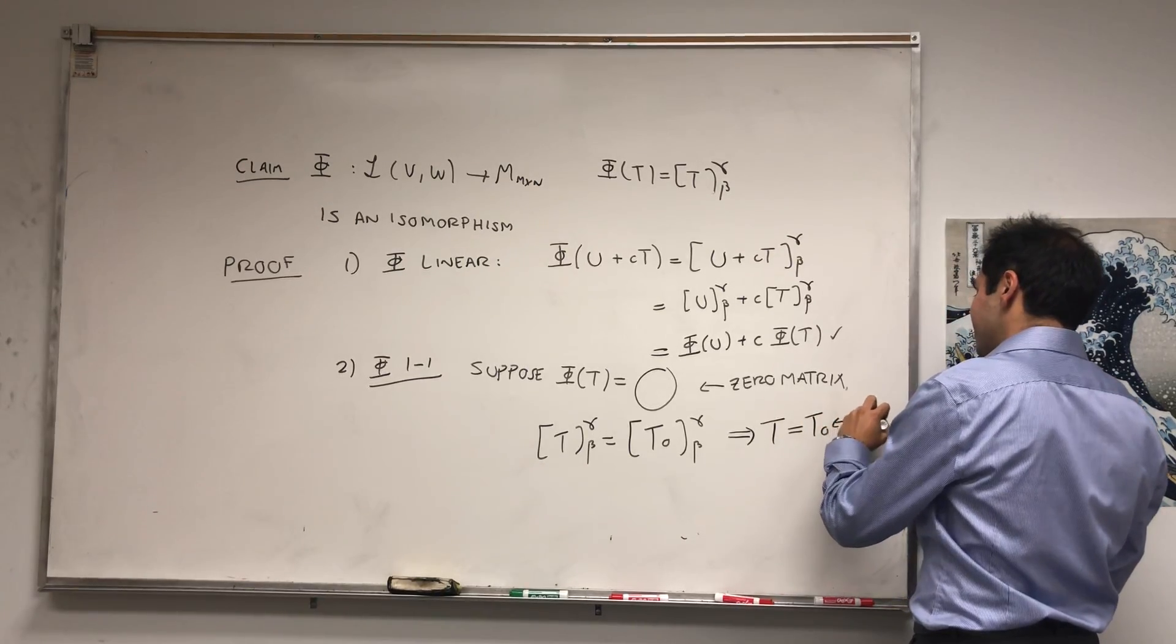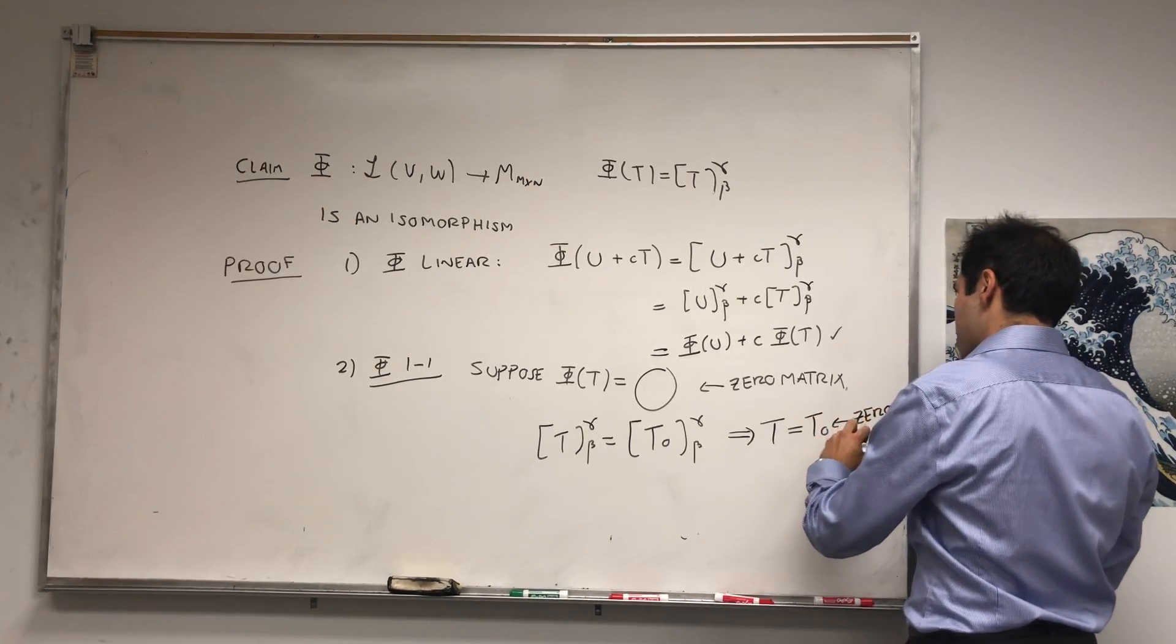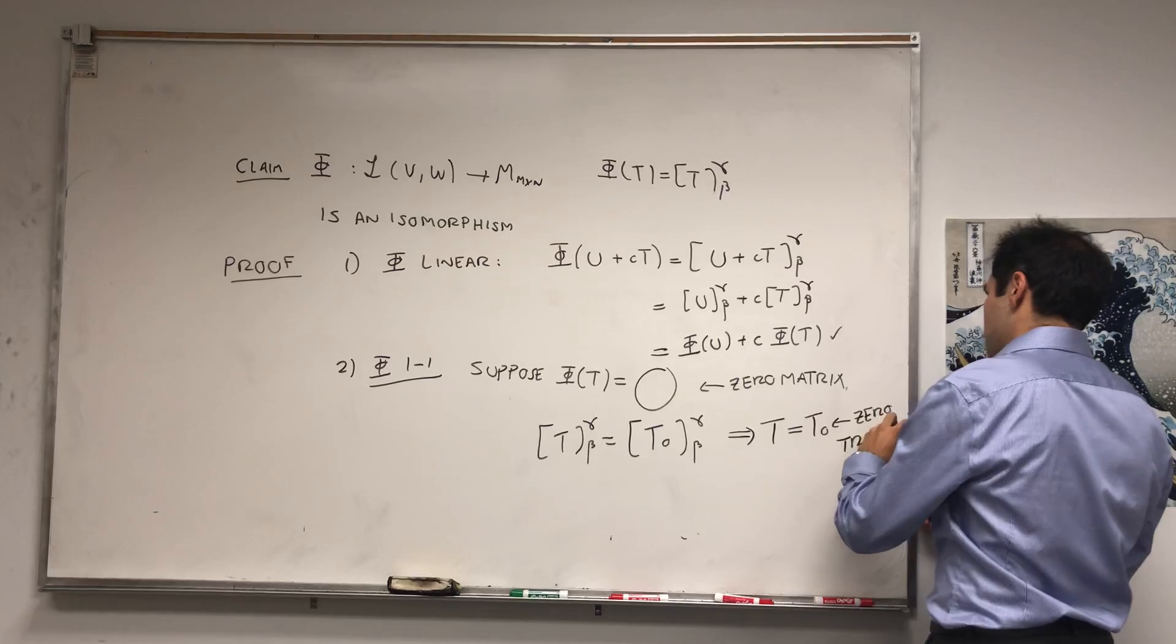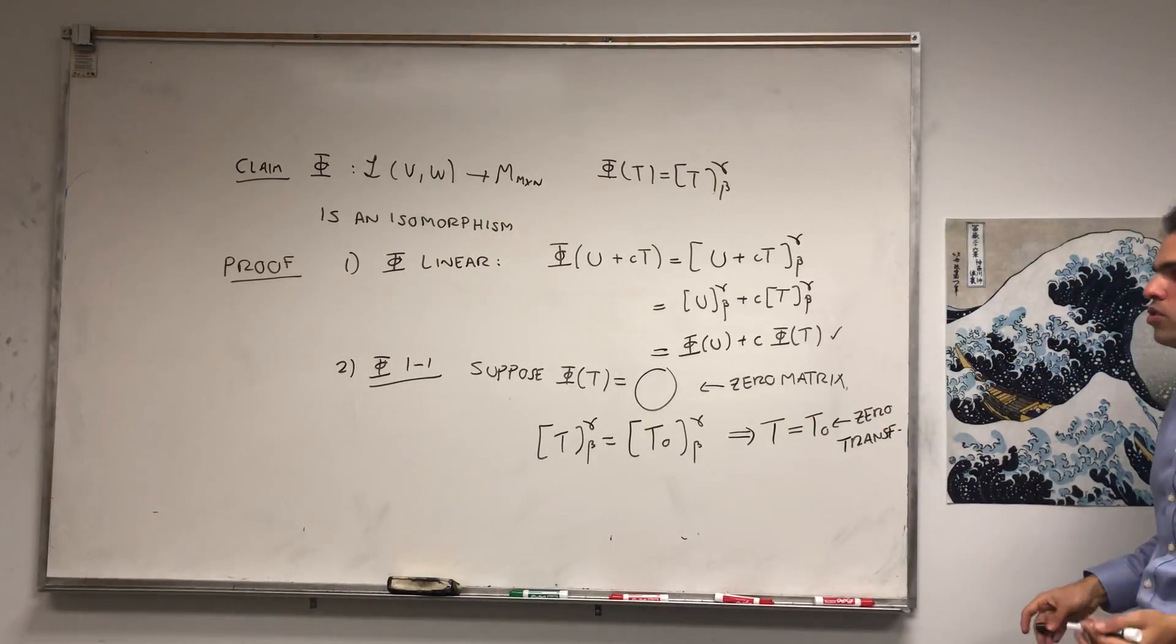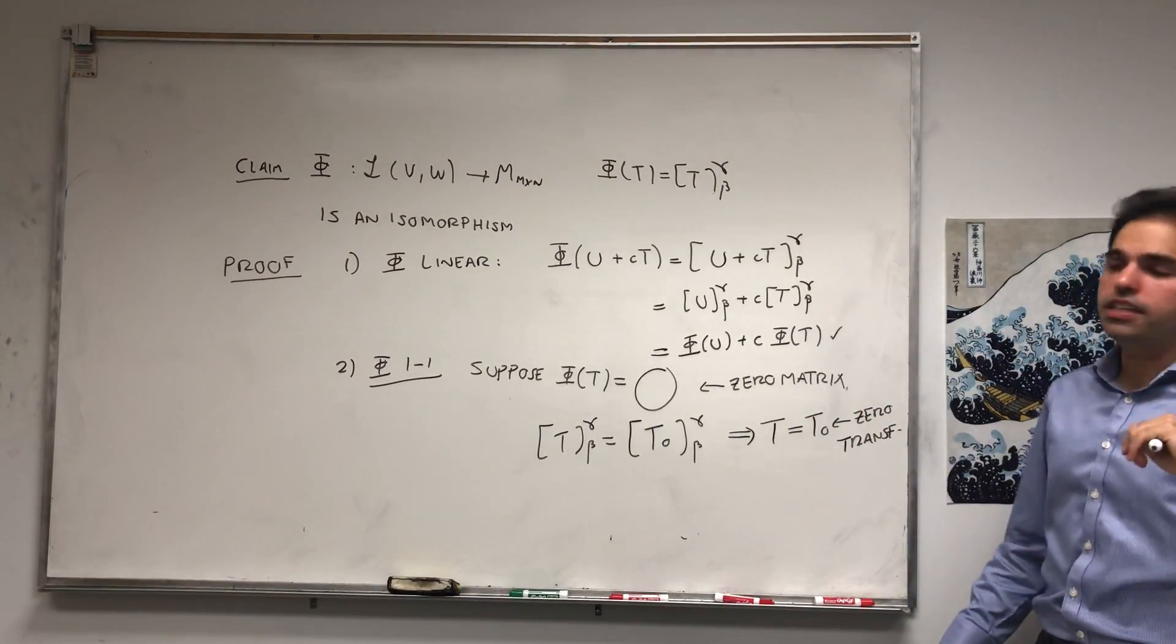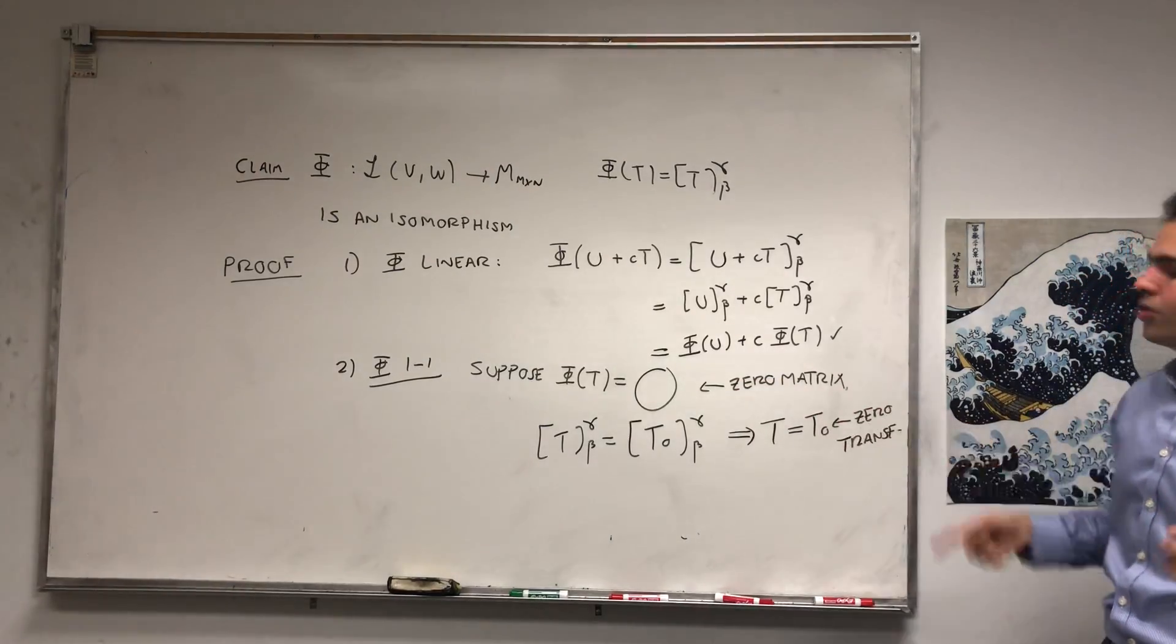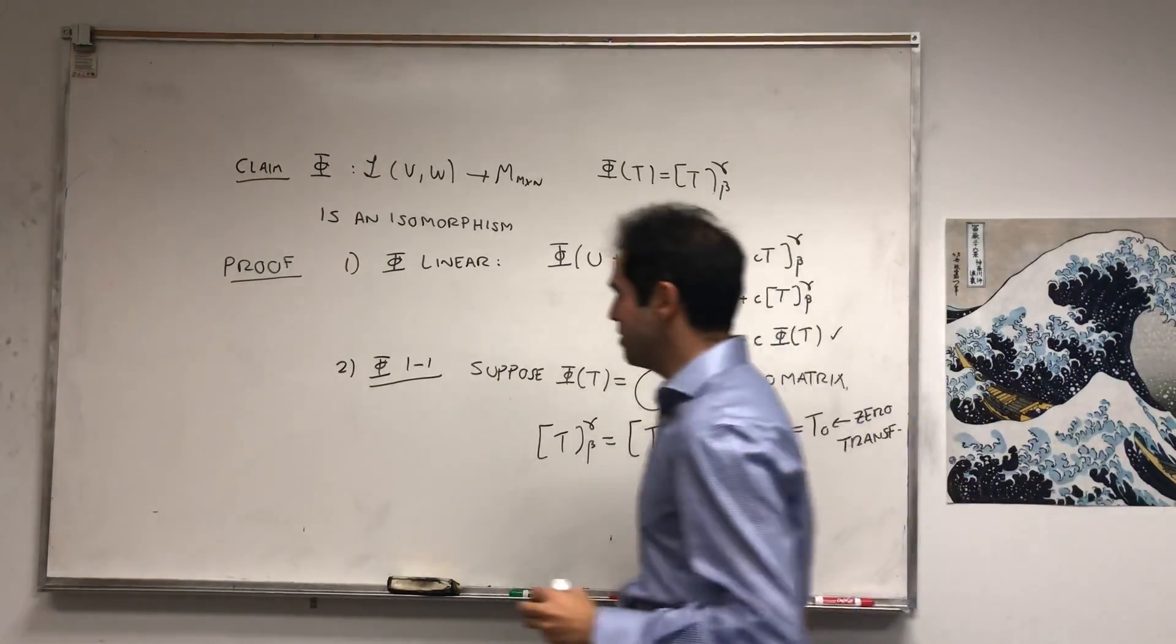And if two matrices are the same, the linear transformations have to be the same. So T is T_0, which is precisely the zero transformation. That's the definition of one-to-one: if phi of T is zero, then T is zero, except you need to interpret what zero means.